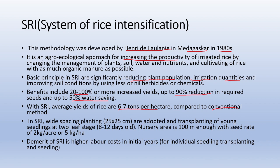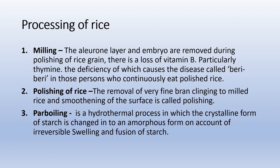In SRI, nursery area of 100 square meters is sufficient with a seed rate of 2 kg per acre or 5 kg per hectare. The demerit of SRI is higher labor cost in initial years and higher production cost, despite benefits like reduced seed requirement, less land requirement, 50% water saving, and improved soil conditions.